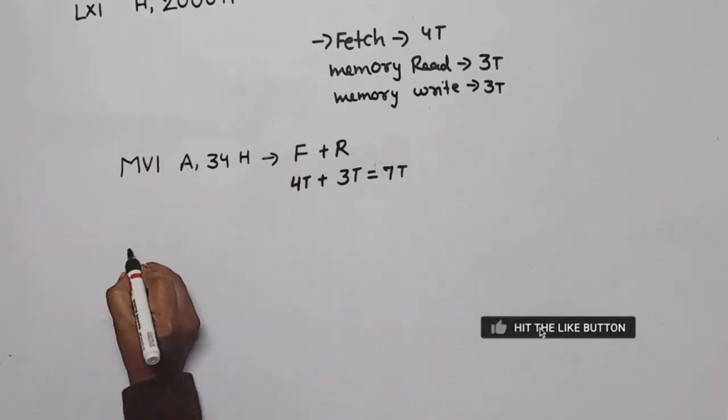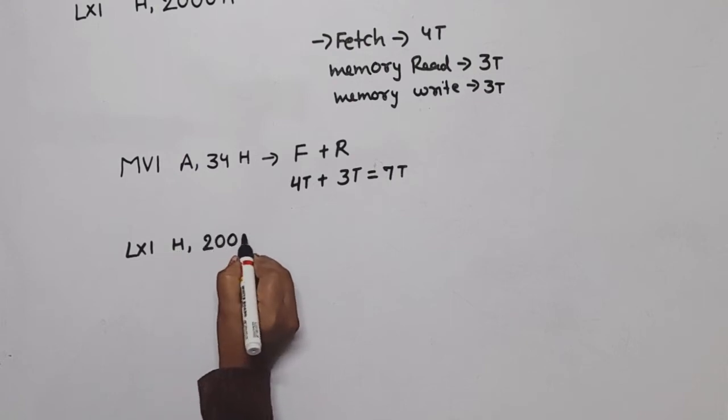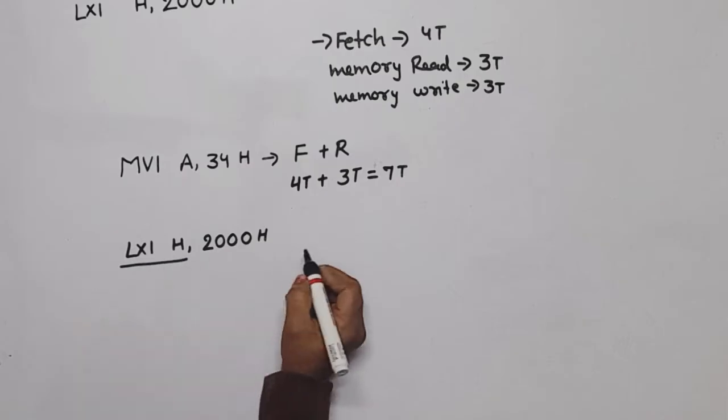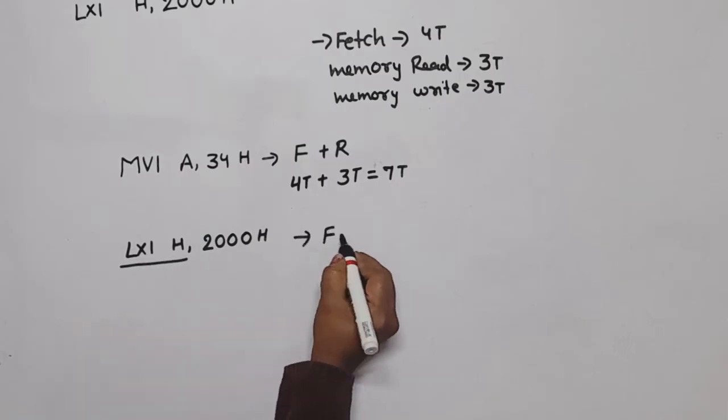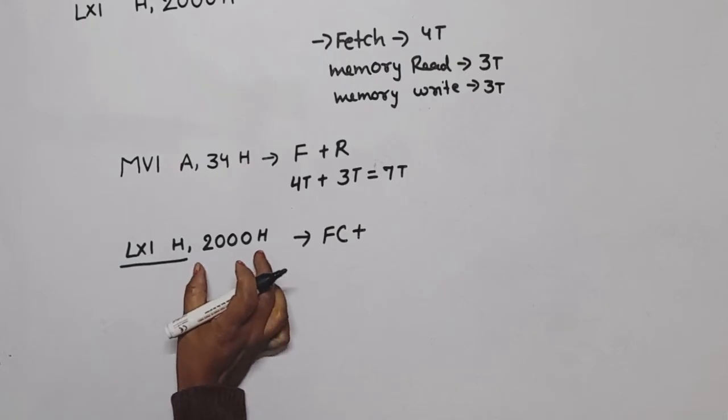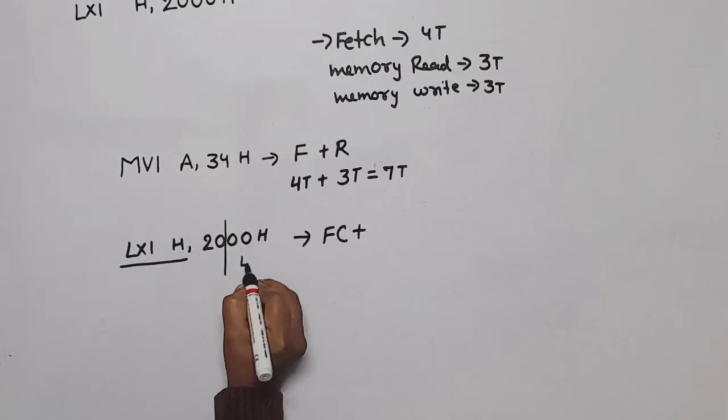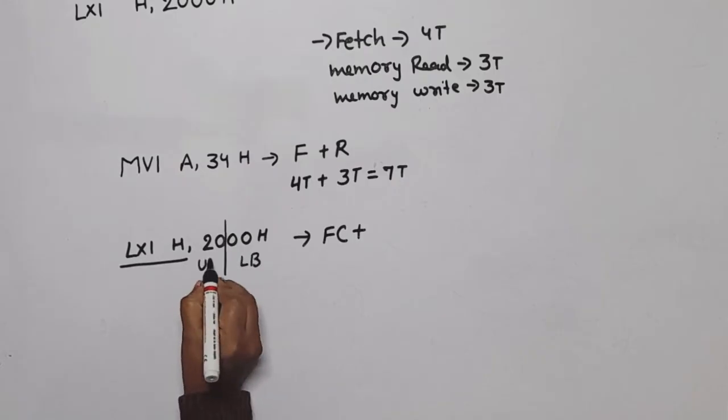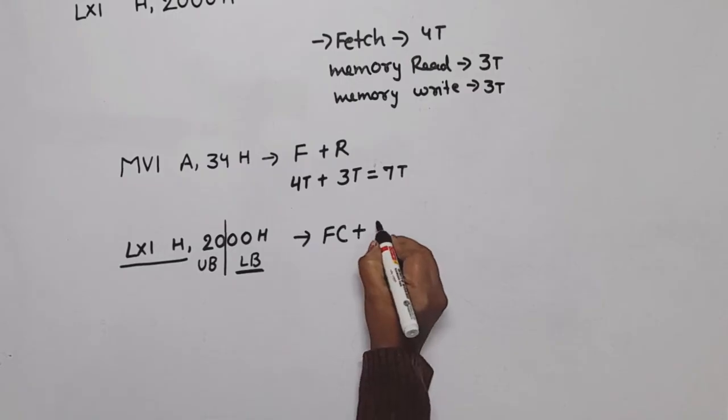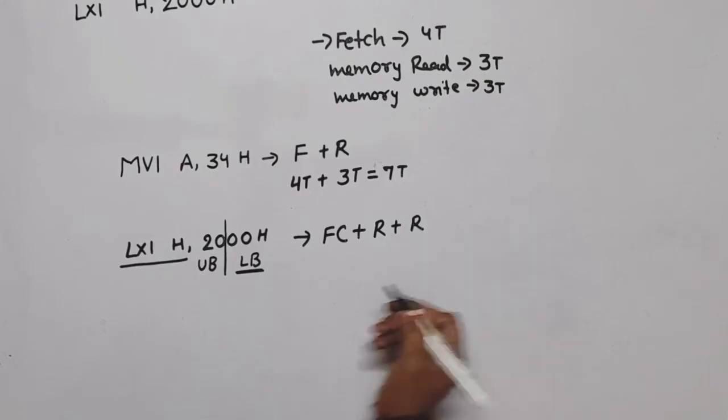Now second example is LXI H,2000H. First we will fetch it, means first machine cycle is fetch cycle. Second cycle, what will be? Now here the data, that is 16-bit data, means it will be divided in two parts. This is lower byte and this is upper byte. So first lower byte read means read operation, plus upper byte read means read operation.